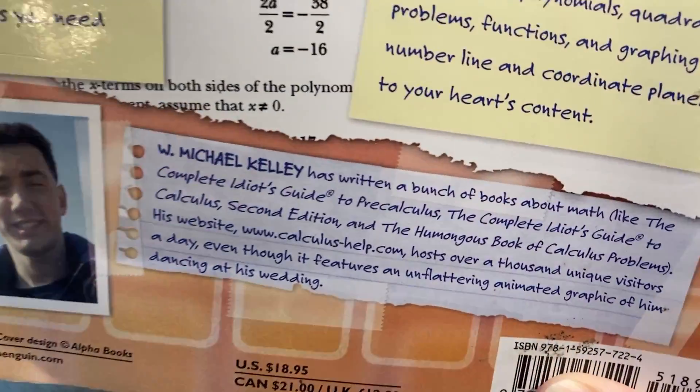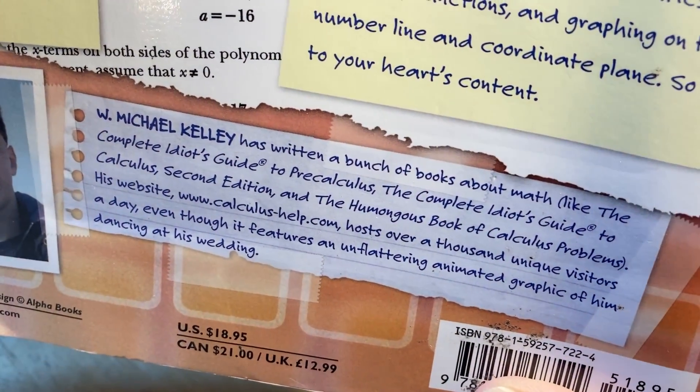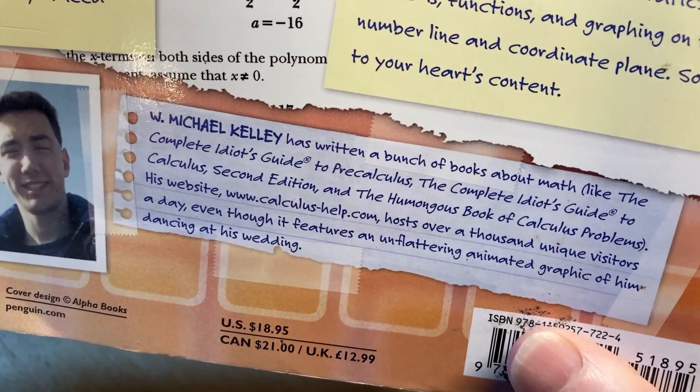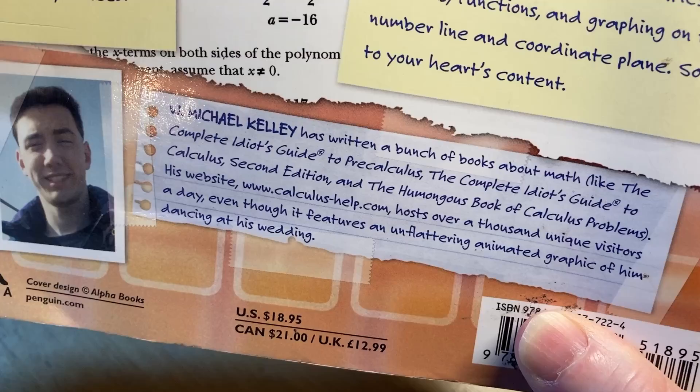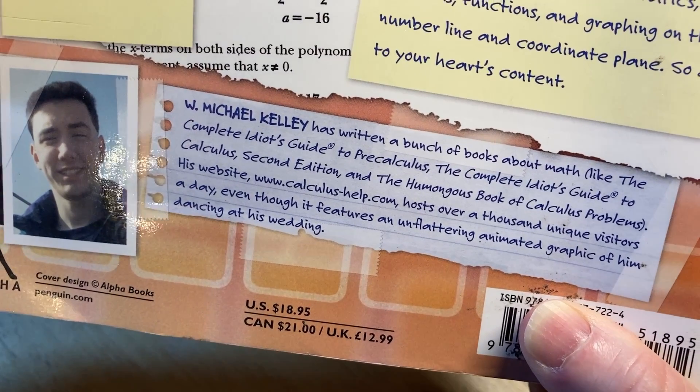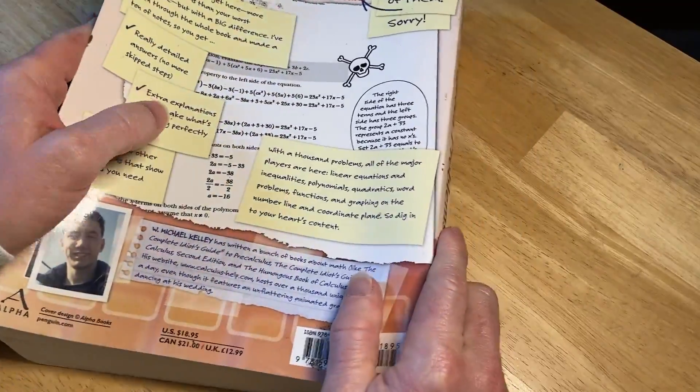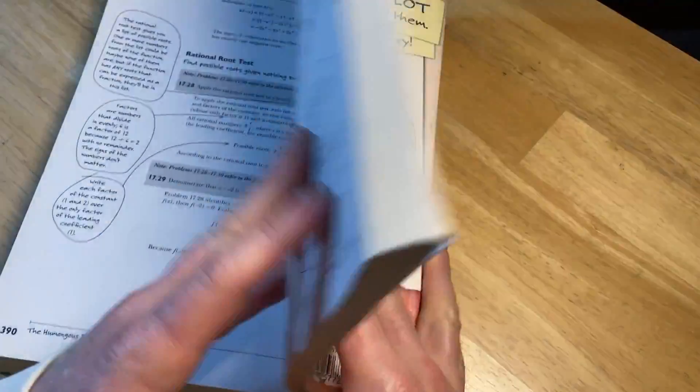Here's Michael Kelly. He's written a bunch of books about math like The Complete Idiot's Guide to Pre-Calculus and The Complete Idiot's Guide to Calculus. He's a book writer with his website. Good stuff. He writes a lot of math books and sells them on Amazon. That's why I got this book.